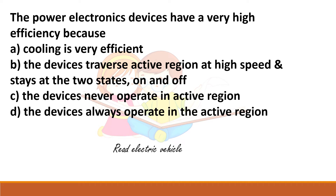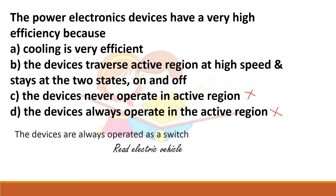Power electronic devices have very high efficiency. The options state: cooling is efficient; devices traverse the active region at high speed and stay at two states; devices never operate in the active region; or devices always operate in the active region. Devices do not always operate in the active region, and it is also false that they never operate there. The correct answer is that while switching from on to off, devices pass through the active region.